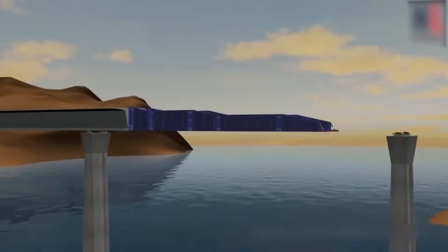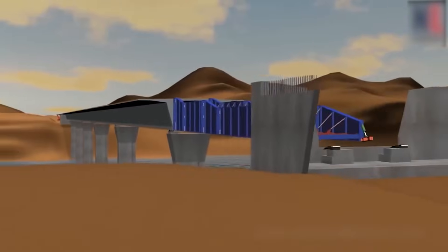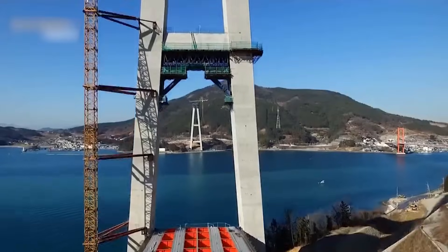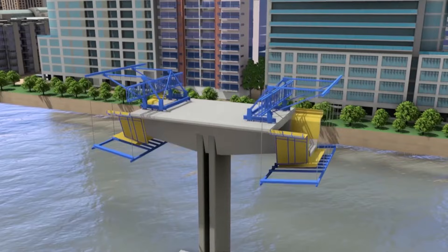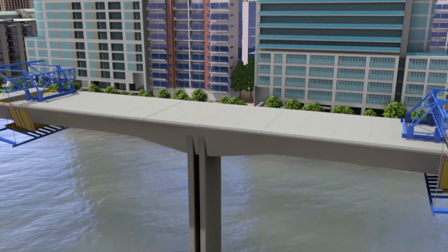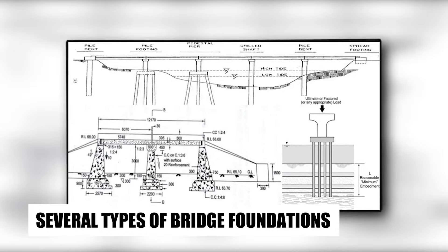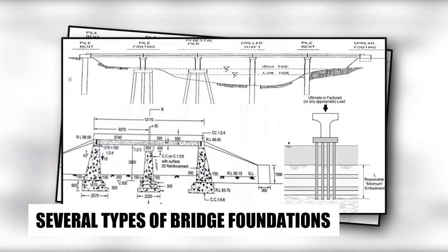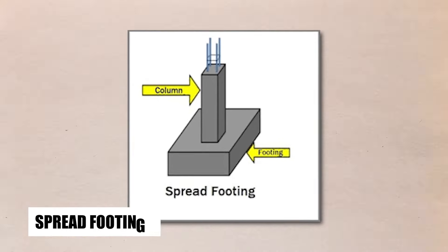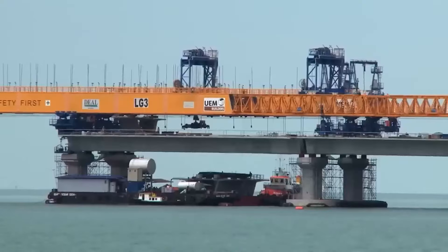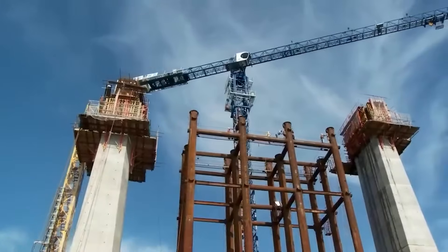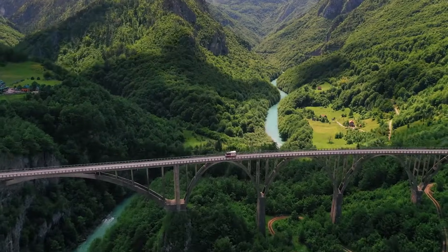Building a strong foundation is essential to the safety and stability of any bridge. The foundation of a bridge provides a stable base for the bridge to rest on and helps to distribute the weight of the bridge evenly across the surrounding terrain. There are several types of bridge foundations, including pile foundations, caisson foundations and spread footings. The type of foundation used depends on a variety of factors, including the location of the bridge and the nature of the surrounding terrain.